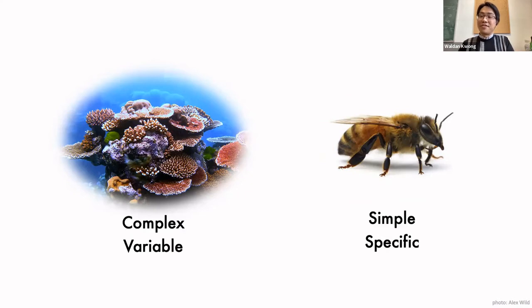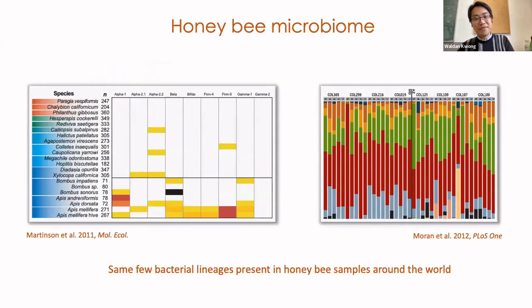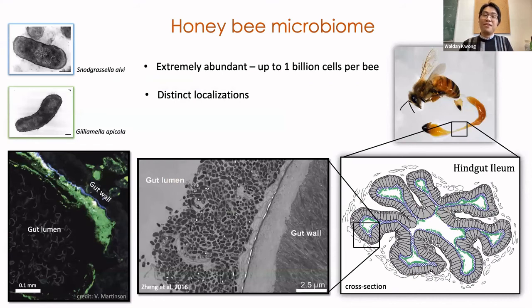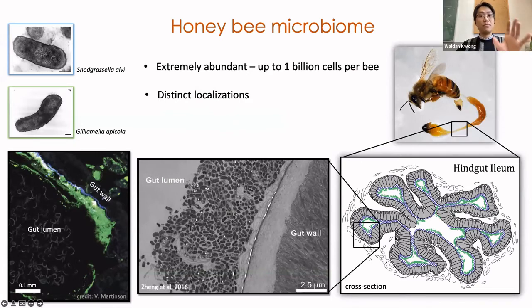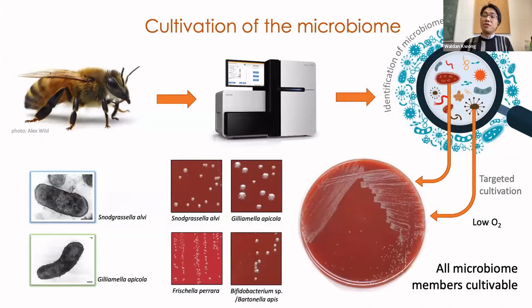Let's move on to talk about my other system — that of bees. In contrast to corals, honeybees have a very well-defined microbiome consisting of five core bacterial lineages and a few other sporadically occurring ones. We know this because since about 2010, culture-independent surveys have consistently found the same bacteria present in bee samples around the world. Here is a picture of the bee and the hindgut region where most of the bacteria are located, with up to 1 billion cells per individual worker bee, and distinct localizations for different species of the gut microbiome.